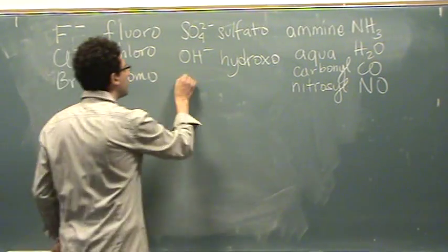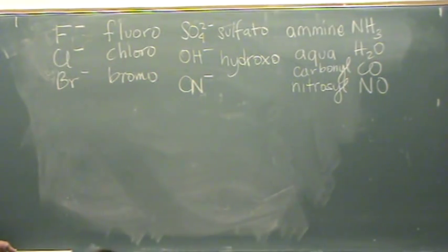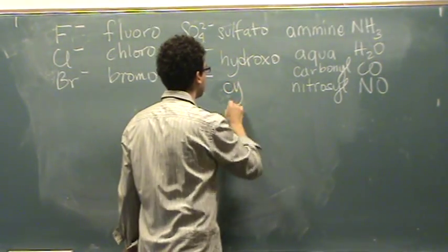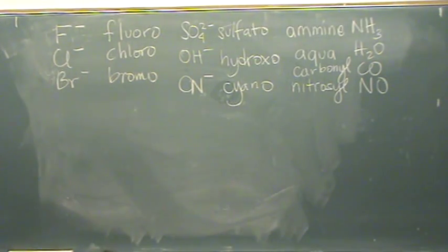One more, just so you can see. What's the name of this one? Cyanide. That's cyanide, so we want to call it cyano. So you kind of get the idea. Really, the ones to memorize are on the right-hand side, the neutral ones. They have the funky names.